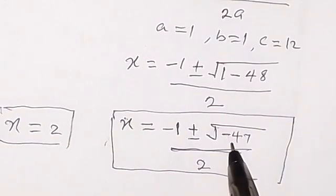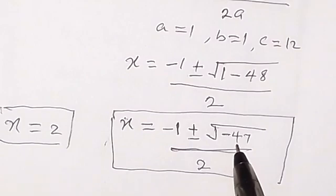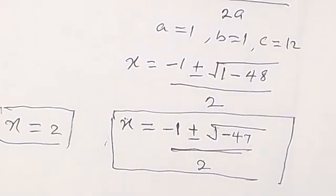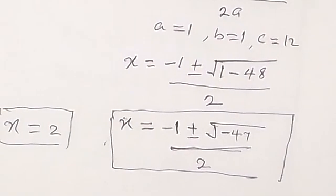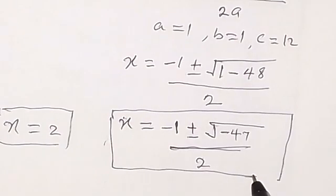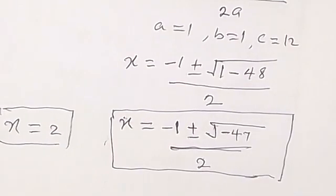We can write this as plus or minus root 47 times i, because it's a complex number. Thank you for joining us. If you're new here, don't forget to click the subscribe button. See you in the next video — bye for now.